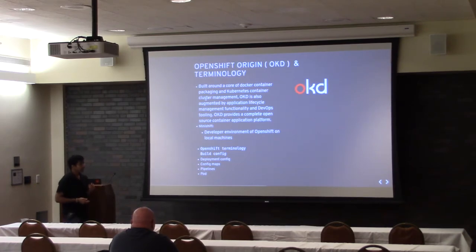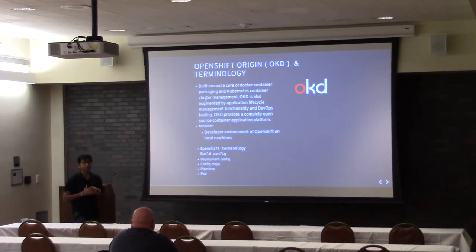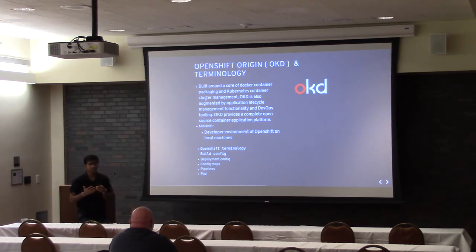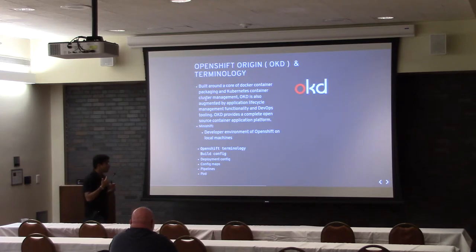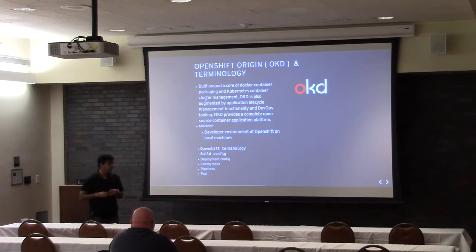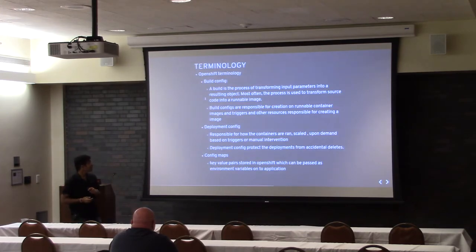OpenShift recently changed its name to OKD, or Origin Kubernetes Distribution. It is built around Docker containers and the Kubernetes distribution platform, which manages different kinds of containers and can also load balance on the containers. OpenShift has many configurations you can use to build and deploy containers, store different metadata about containers, create pipelines, and create pods inside the container.